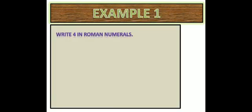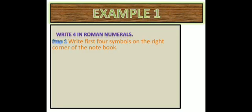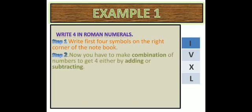First example: write 4 in Roman numerals. Step 1, write the first four symbols on the right corner of the notebook, as I have written: I, V, X, L. I is equal to 1, V is equal to 5, X is equal to 10, and L is equal to 50. You cannot make any combination apart from these four symbols.